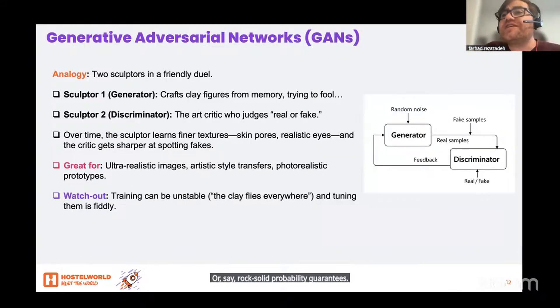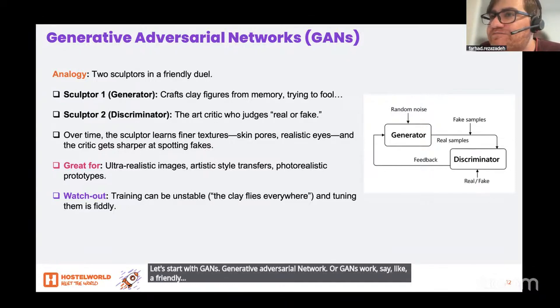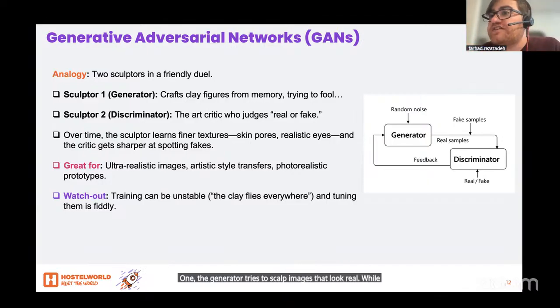Let's start with GANs. Generative adversarial networks, or GANs, work like a friendly rivalry between two artists. One, the generator, tries to sculpt images that look real, while the other, the discriminator, plays critic.